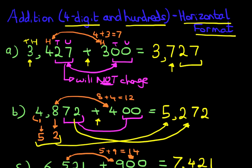Have a practice with a few numbers. Pick a four-digit number at random and add hundreds to it, and you'll soon get the hang of this. So that is addition of four-digit numbers and hundreds using the horizontal format.